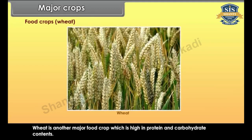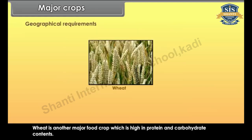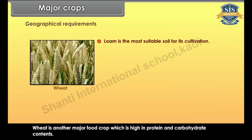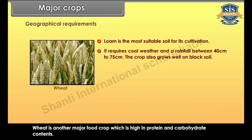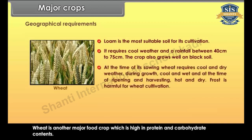Wheat is another major food crop which is high in protein and carbohydrate contents. Loam is the most suitable soil for its cultivation. It requires cool weather and a rainfall between 40 cm to 75 cm. The crop also grows well on black soil. At the time of its sowing, wheat requires cool and dry weather; during growth, cool and wet; and at the time of ripening and harvesting, hot and dry.